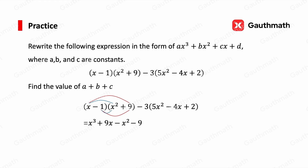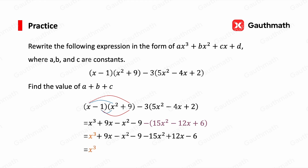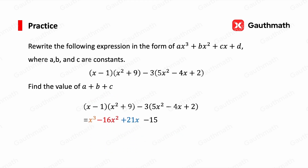Similarly, we distribute 3 into the second bracket and open it. Then we combine like terms: x³ stands alone; for x², we have −x² − 15x² = −16x²; for x, we have 9x + 12x = 21x; and the constants give −9 − 6 = −15. So a = 1, b = −16, c = 21, and a + b + c = 6.